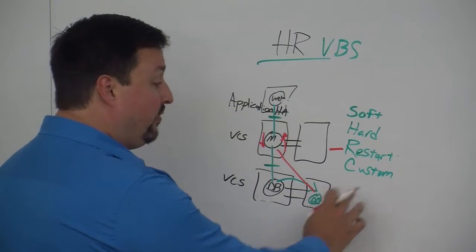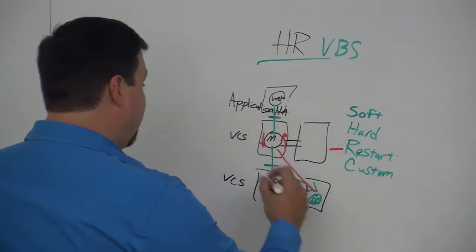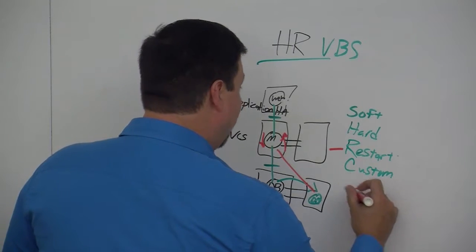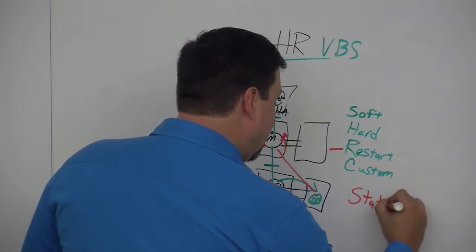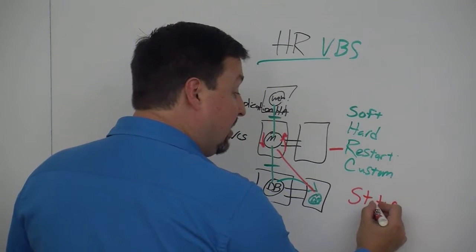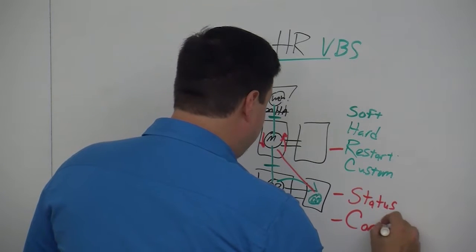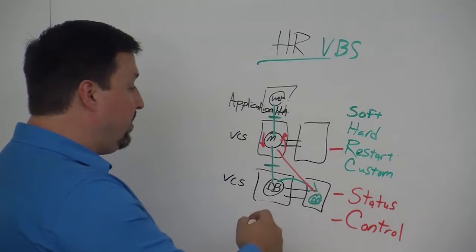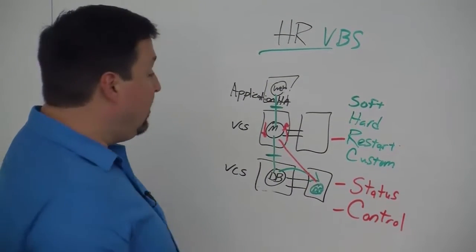From this we have two major benefits. You have the ability to look at a multi-tier application status, so you can see the visibility of that multi-tier app. You can see all the layers at one time. And control. You can bring up the entire multi-tier app from the lowest level all the way to the top with one command in the correct sequence.